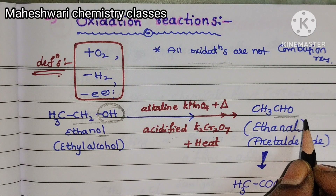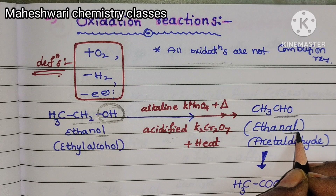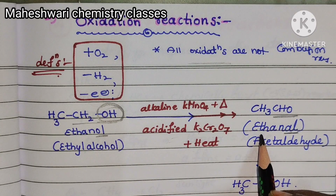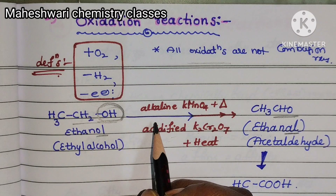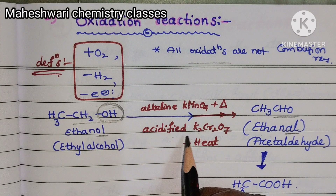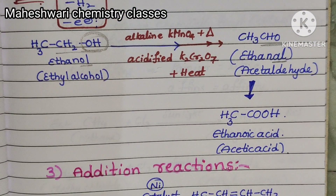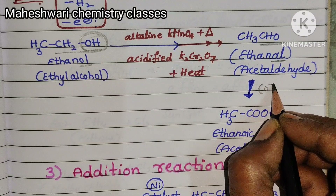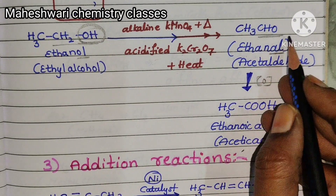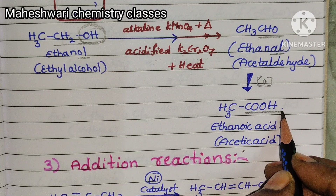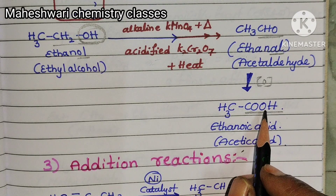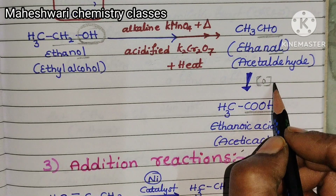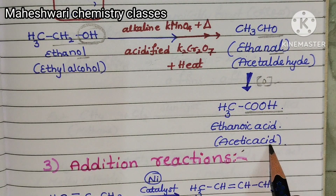Ethanal (two carbons, ETH + AL) in the presence of alkaline potassium permanganate and heat, or acidified potassium dichromate and heat, again undergoes oxidation — one more oxygen is added. CHO converts to COOH, meaning aldehyde converts to a carboxylic acid (suffix -oic acid). Ethanol → ethanal → ethanoic acid, which is acetic acid.